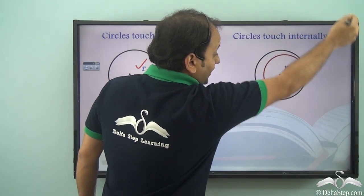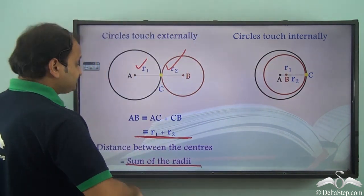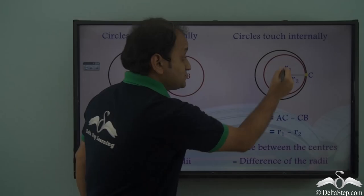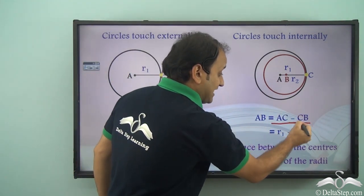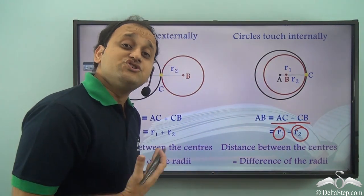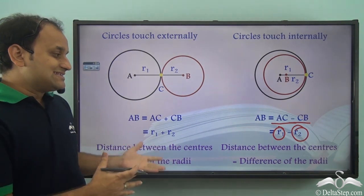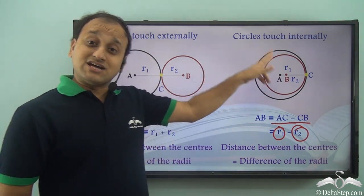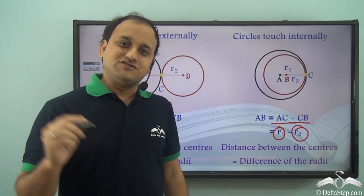When circles touch internally, AC is R1 and BC is R2, and AB equals AC minus CB — that is, R1 minus R2, where R1 is the larger radius and R2 is the smaller. So the distance between the centers equals the difference of the radii. These are the two important results: when circles touch internally or externally, the point of contact always lies on the line through the two centers.